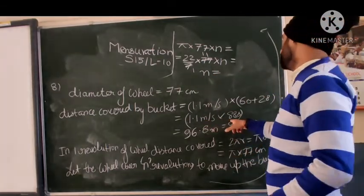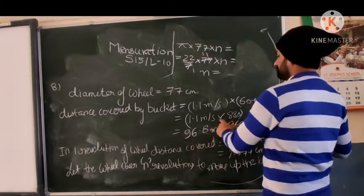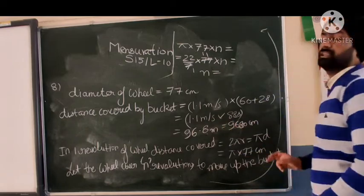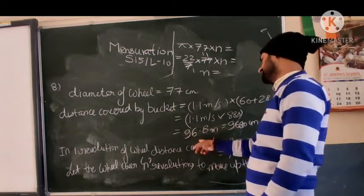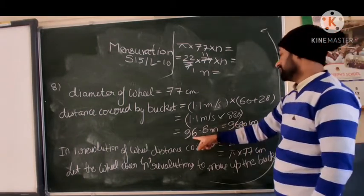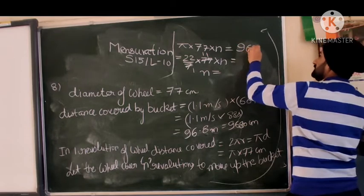So how many cycles will the wheel cover? 1.1 into 88 is 96.8 meter. 11 times 28: 8, then it carries, so 28 plus 2 is 30, giving 96.8 meter. Multiply by hundred equals 9680 centimeter.